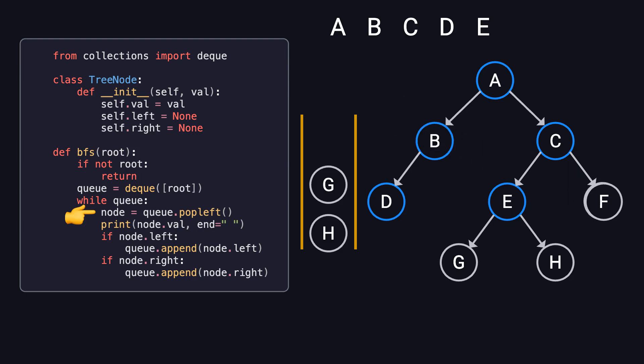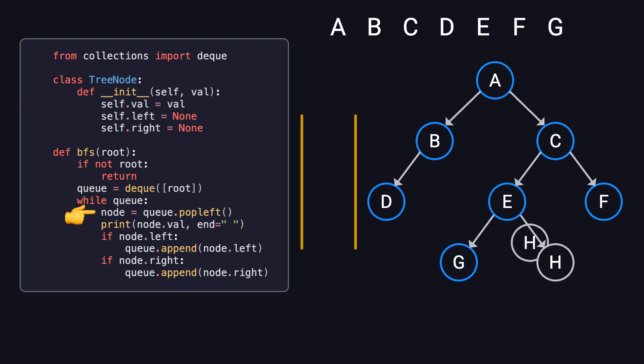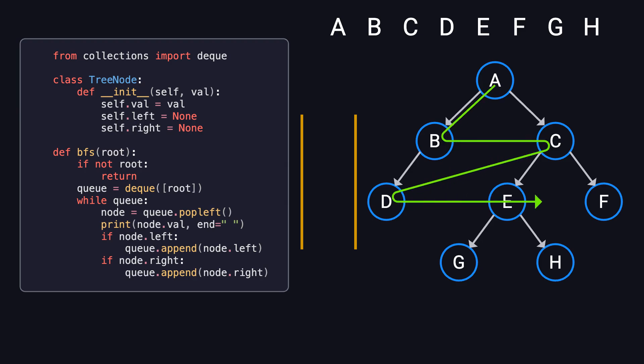Next, we dequeue F, visit it, and since it has no children, the queue remains unchanged. Finally, we dequeue G and H one by one and visit them. At this point, the queue is empty, meaning the traversal is complete. This process clearly shows that BFS explores nodes level by level. Each time we visit a node, we enqueue all of its children. This ensures BFS expands outward until the entire tree is fully traversed.